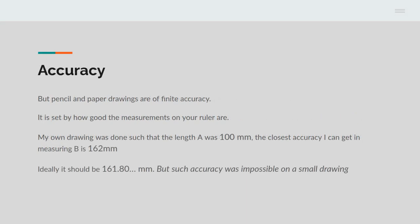The problem with this is that if you measure things with paper and pencil, your measurements are obviously done to a finite accuracy. If you've got a ruler with millimeter gradations, you can't measure more accurately than millimeters. The drawing I used for the video here, I set A to be 100 millimeters, and the closest accuracy I could get to measuring B was 162 millimeters. Ideally, it should be 161.80 more digits. So I was off by at least 2 tenths of a millimeter. But more accuracy is impossible on a small drawing.